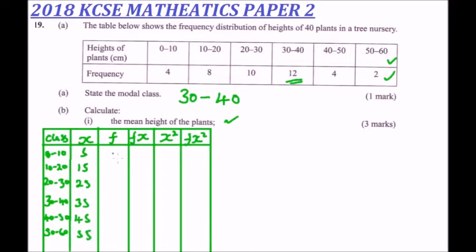The frequencies given in the table are: 4, 8, 10, 12, 4, and 2 for the classes 0–10 through 50–60 respectively.